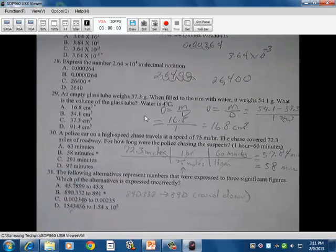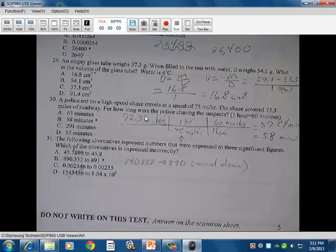29 is using density. The empty glass tube weighs 37.3 grams. When filled to the rim with water, it weighs 54.1 grams. What is the volume of the glass tube? So once again, we're doing a density. And this time, once again, we're doing volume. So we take the density. Density equals mass times volume. Then we want to go in there and solve that for volume. So now we have mass over density again.